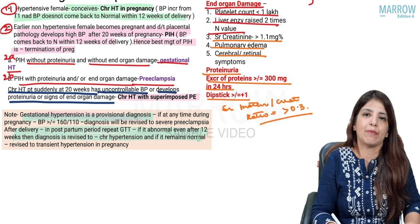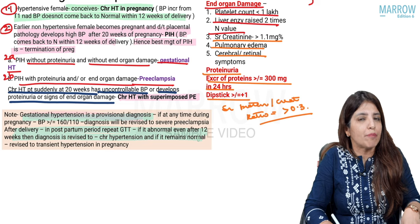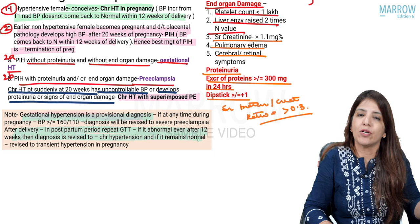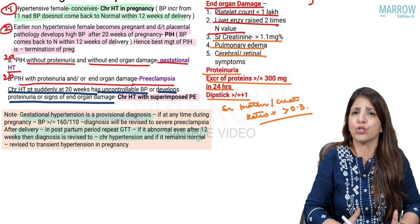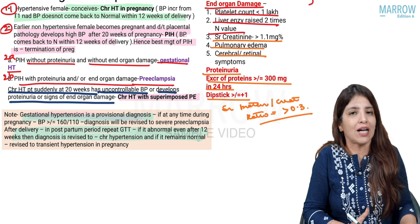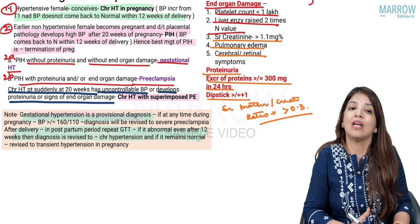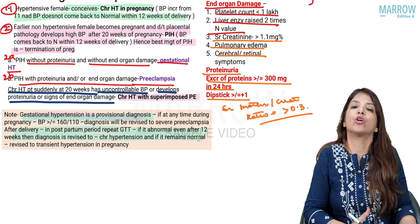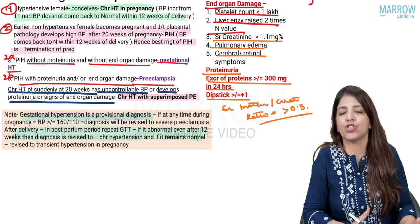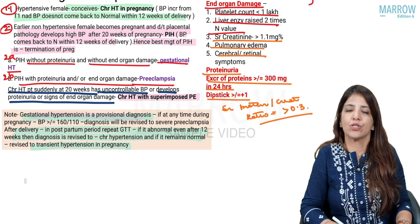In all gestational hypertensive patients, after 12 weeks post-delivery you should check their BP. If BP is still raised, revise the diagnosis to chronic hypertension. A patient may not have known she had pre-existing hypertension before pregnancy. If BP is normal after 12 weeks, instead of gestational hypertension, call it transient hypertension in pregnancy. So gestational hypertension diagnosis is always provisional.